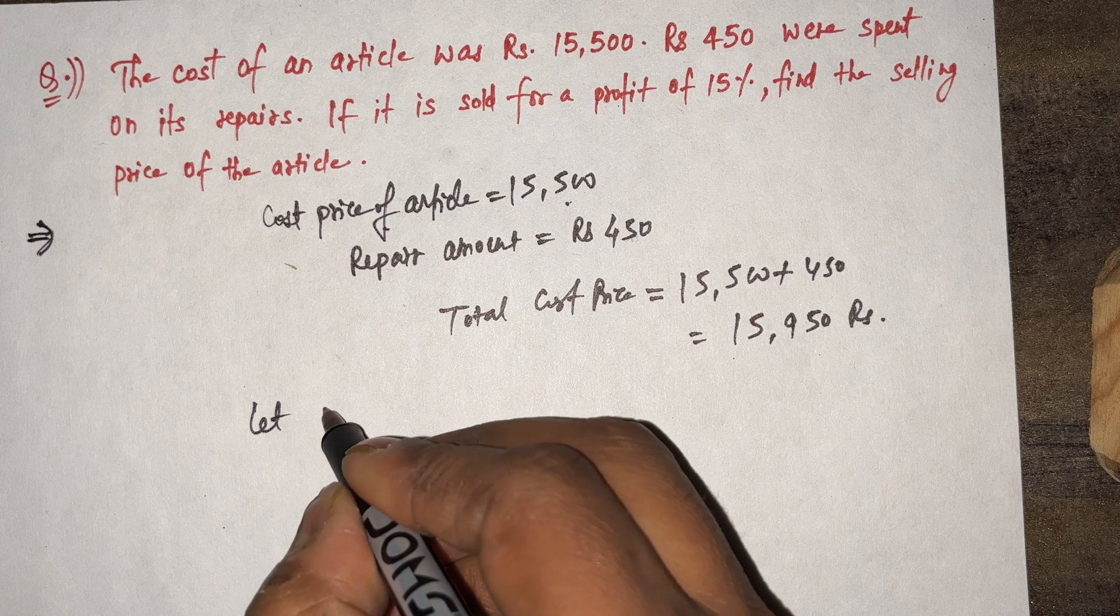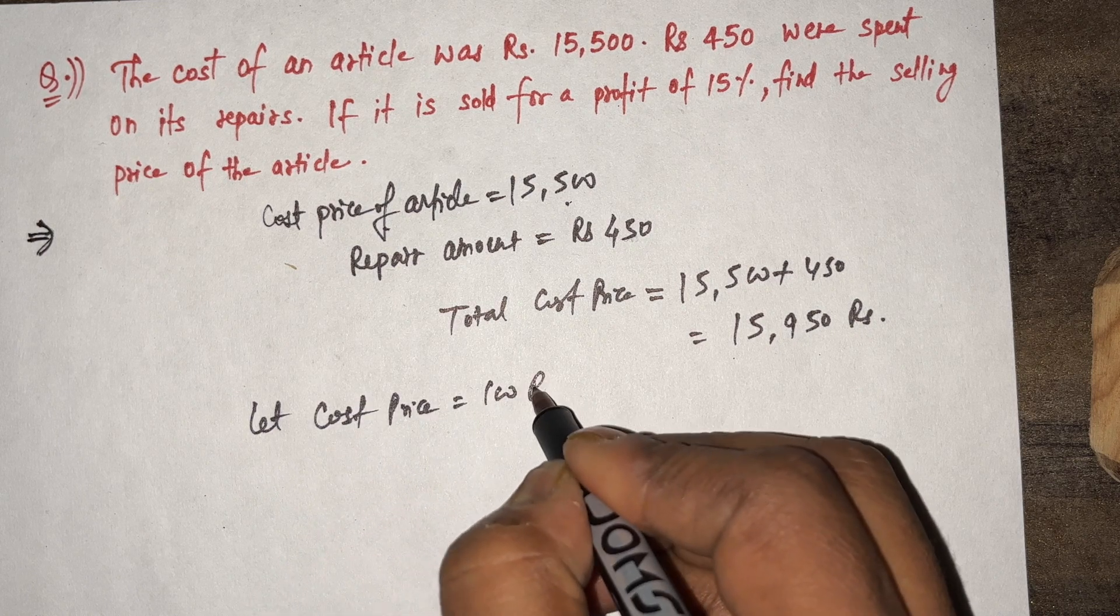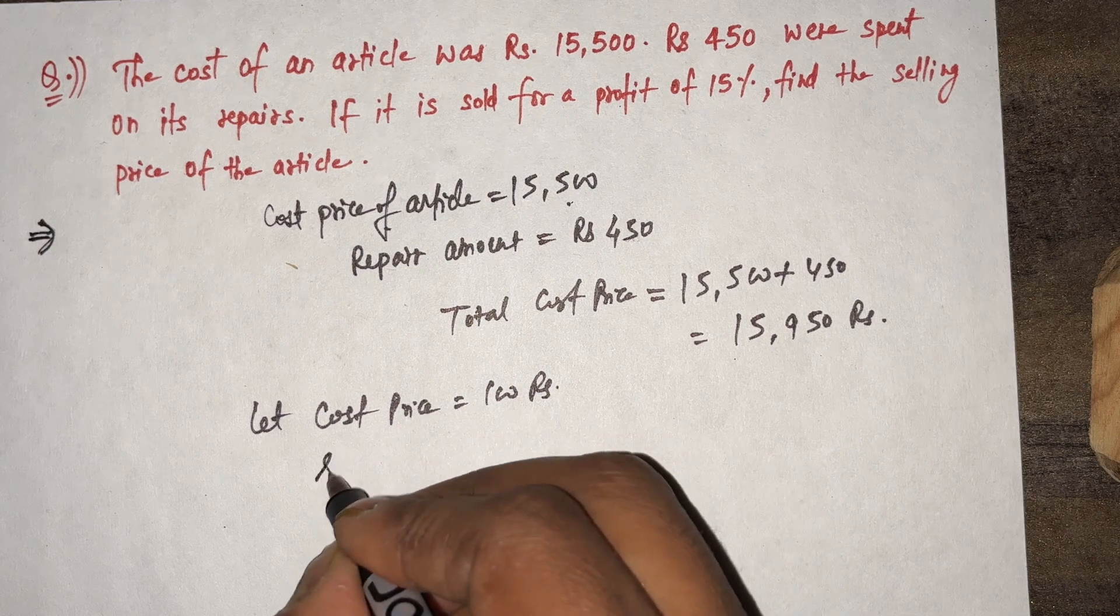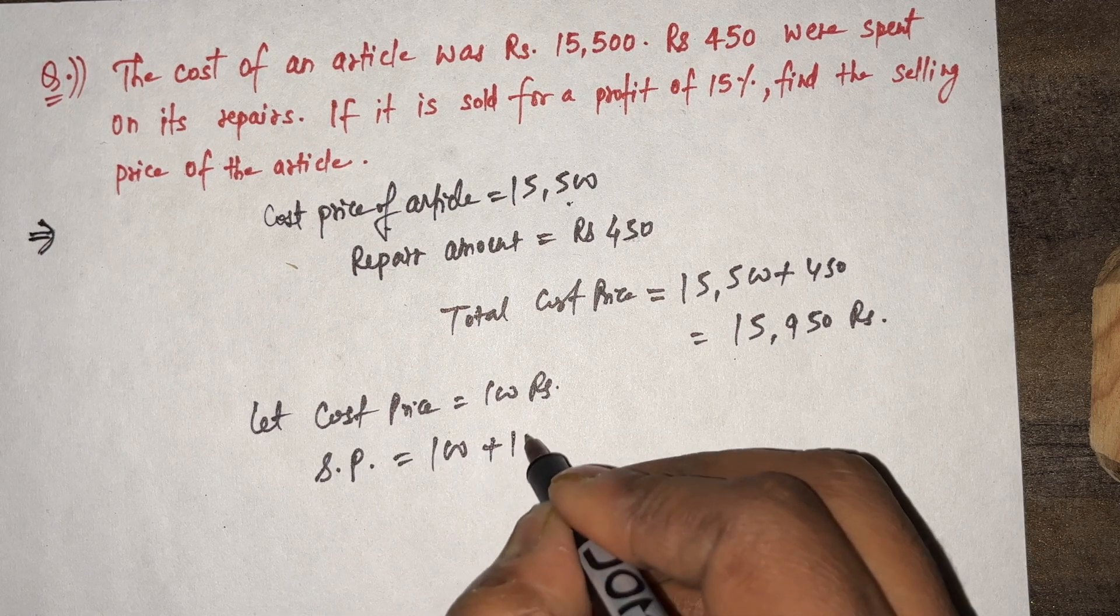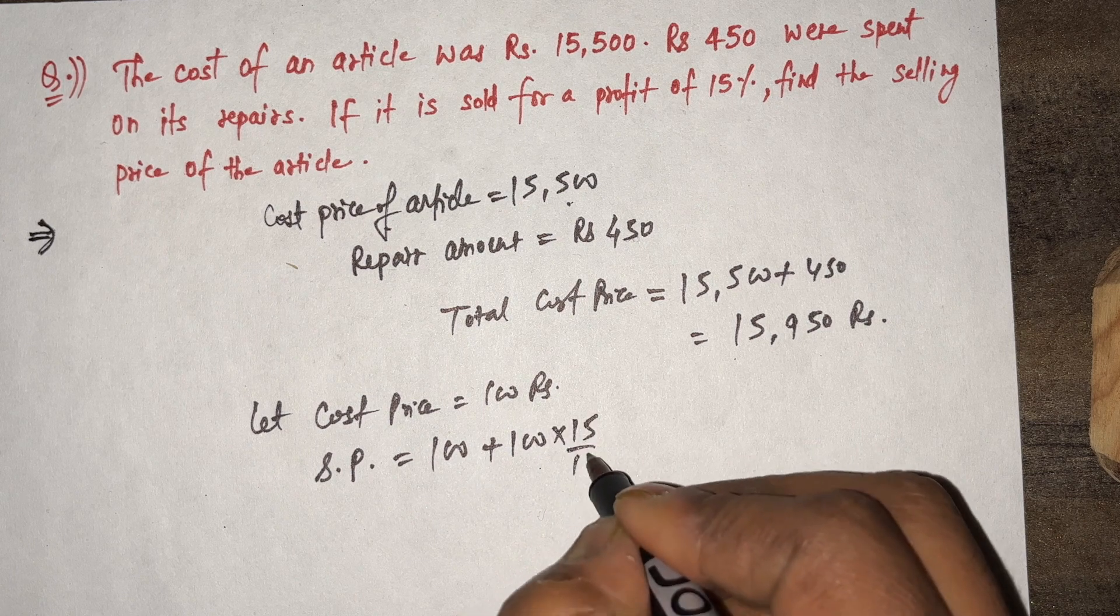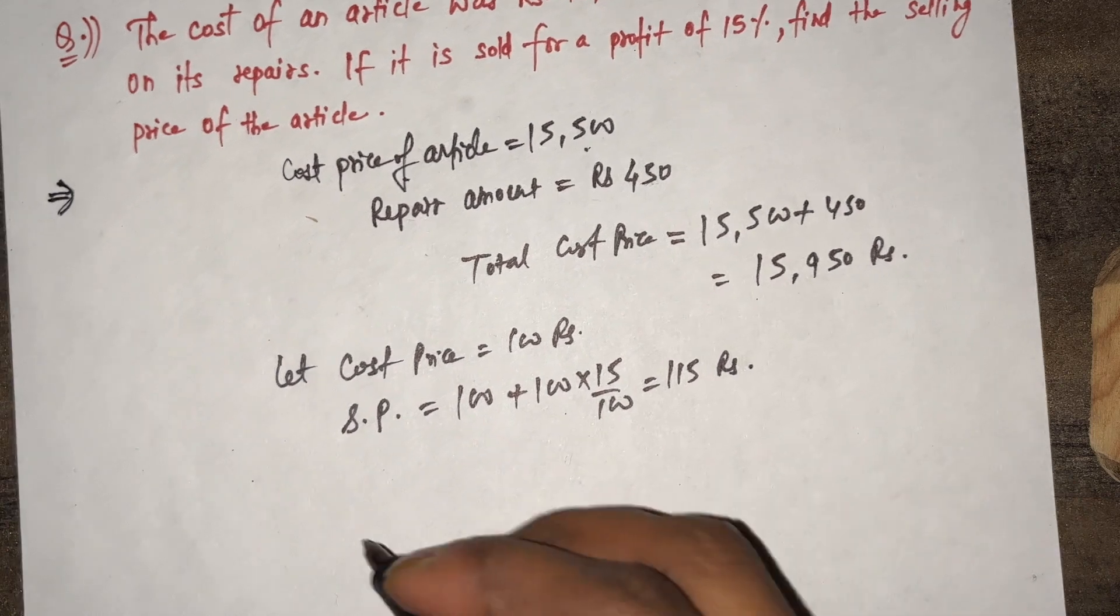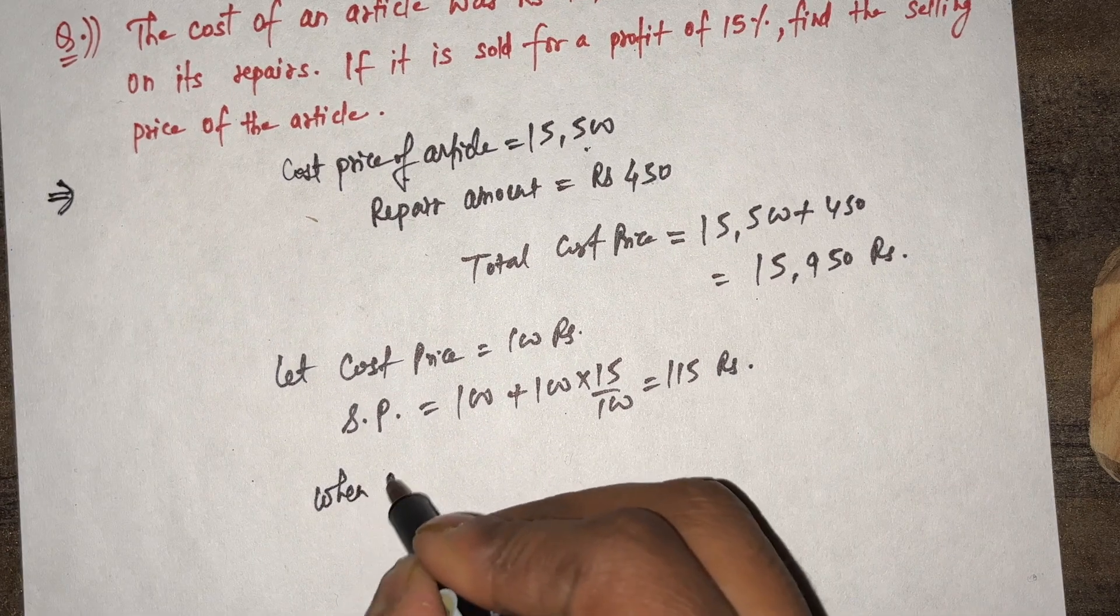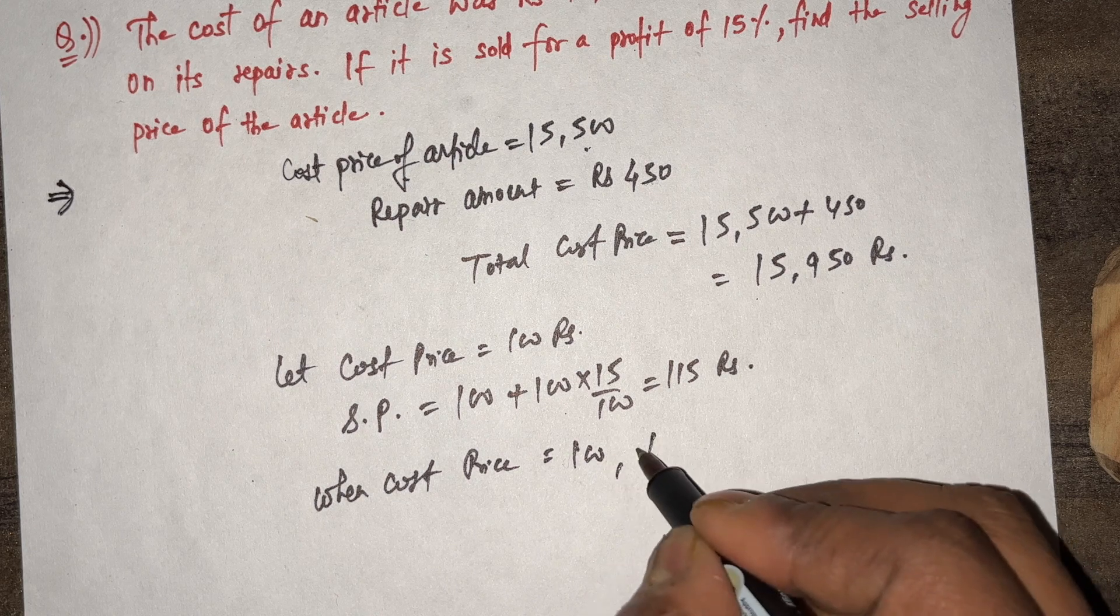Let's assume cost price equals 100 rupees. When cost price is 100 rupees, then selling price at 15% profit will be 100 plus 100 times 15 divided by 100 equals 115 rupees. So when cost price equals 100, then